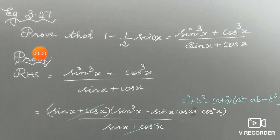Example 3.27, prove that 1 minus half sin 2x is equal to sin cube x plus cos cube x, the whole thing divided by sin x plus cos x.